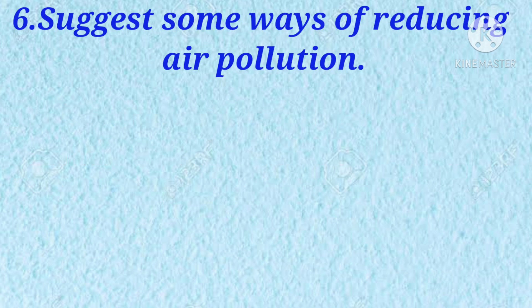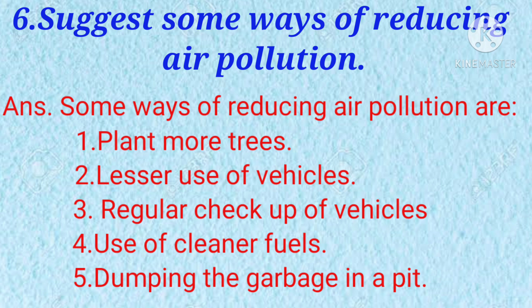Next question is, suggest some ways of reducing air pollution. Answer: some ways of reducing air pollution are — number one, plant more trees; number two, lesser use of vehicles; number three, regular check-up of vehicles; number four, use of cleaner fuels such as LPG and biogas instead of cowdung cake or wood; and number five, dumping garbage in a pit instead of open burning, so that it can change into compost.